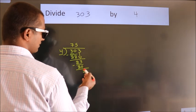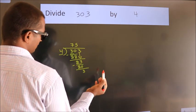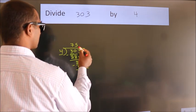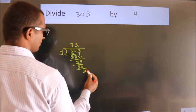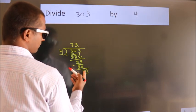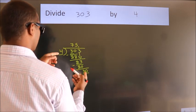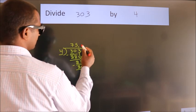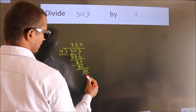After this, no more numbers to bring down. So what we do is we put a dot and take 0. So 30. A number close to 30 in the 4 table is 4 times 7 equals 28.